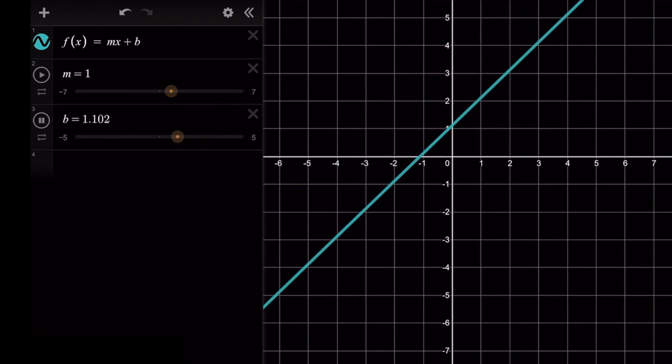Then similarly, if b is a negative value, we're just shifting the graph down. And so we're intersecting that vertical axis at whatever that b value is. It might just be negative or positive.